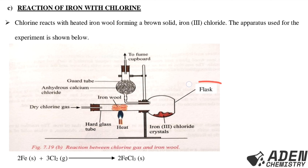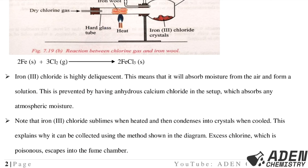The iron(III) chloride is collected in a flask. In the guard tube there is anhydrous calcium chloride. Iron(III) chloride is highly deliquescent — it absorbs moisture from the air and forms a solution. This is prevented by the anhydrous calcium chloride in the setup. The role of anhydrous calcium chloride is to absorb any atmospheric moisture.